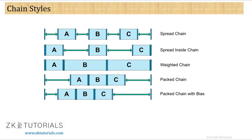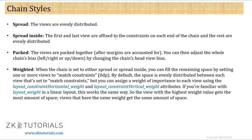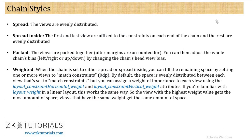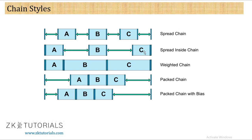Spread inside chain: the first and last views are affixed to the constraint on each end of the chain — they are constrained at the parent — and the rest are evenly distributed. If we have five widgets, the first and last elements come at the parent and the other three are distributed evenly. That part in between A and C gives you spread inside chain for five elements.